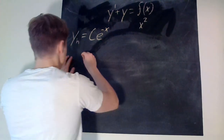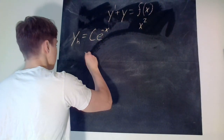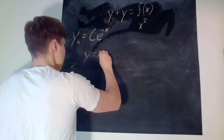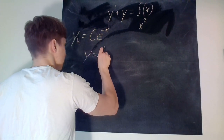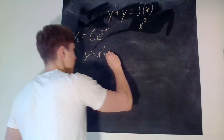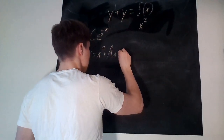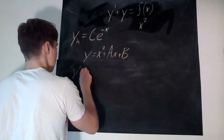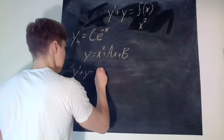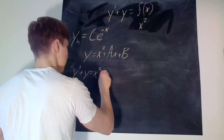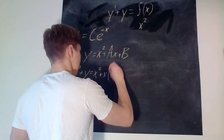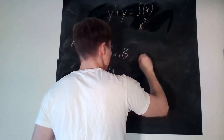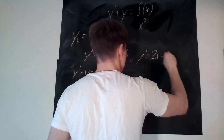So we make an ansatz — a guess — that y is equal to x squared, plus some constant a times x, plus some constant b. That means that y prime plus y is equal to x squared plus x times a plus... and y prime is therefore equal to 2x plus a.